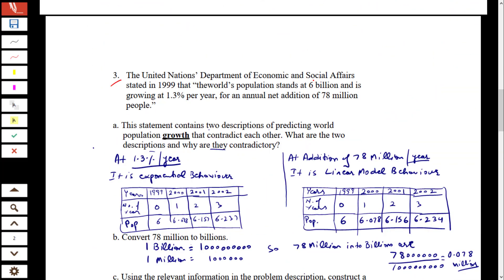The next question: the Department of Economic and Social Affairs states that in 1999 the world population stands at 6 billion, growing at 1.3% per year, with an annual net addition of 78 million people. These two statements are contradictory. The 1.3% per year growth is exponential behavior, whereas an addition of 78 million each year is a linear model, as given by the table.